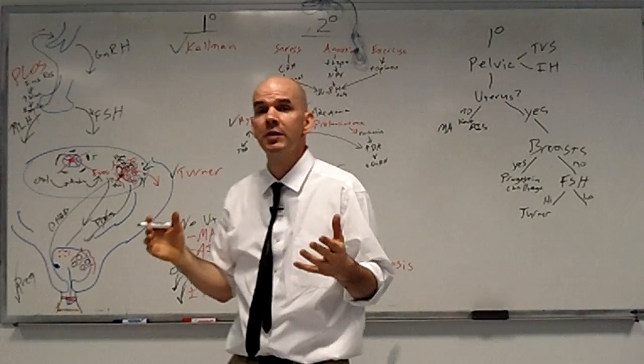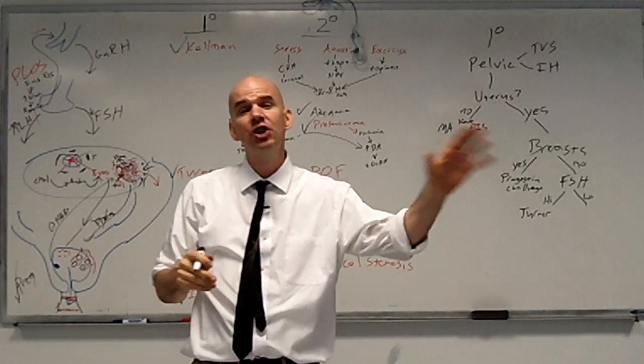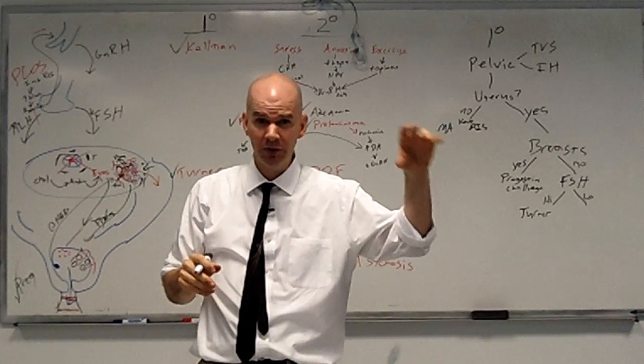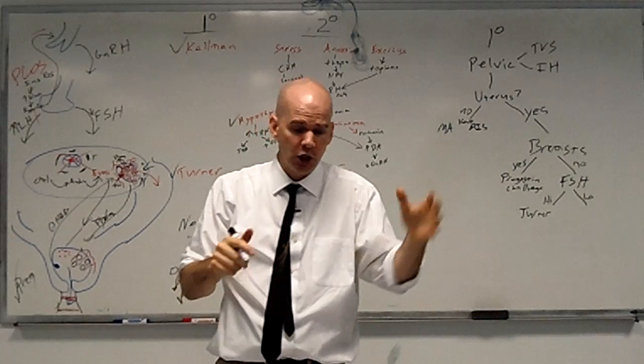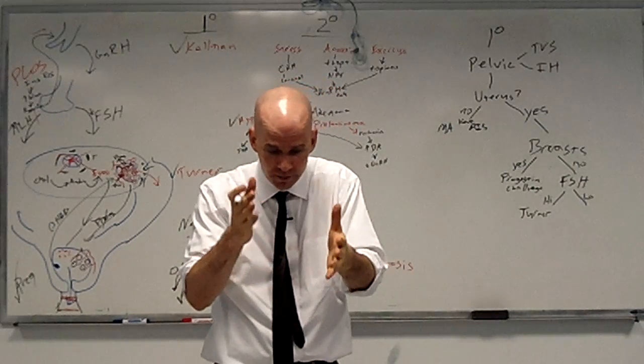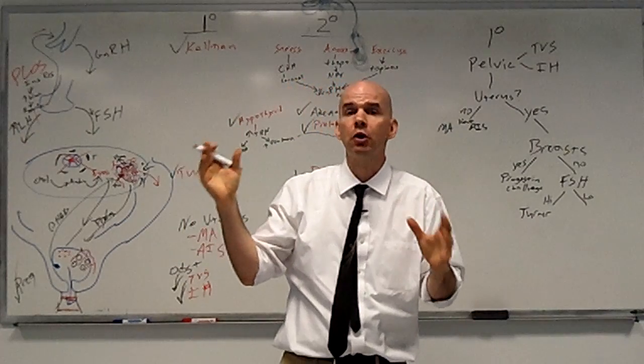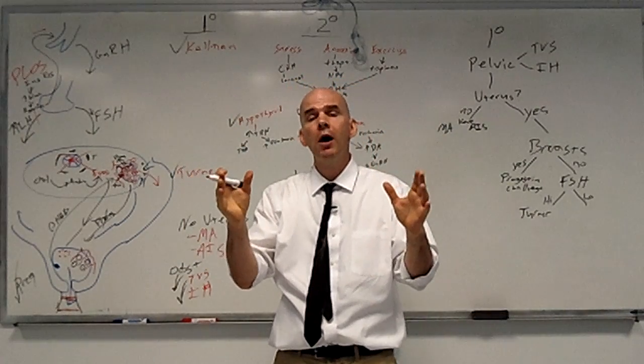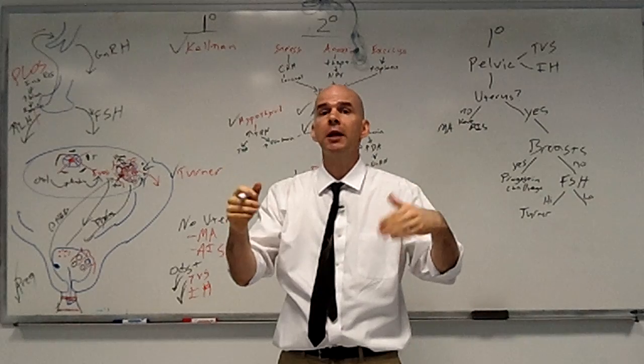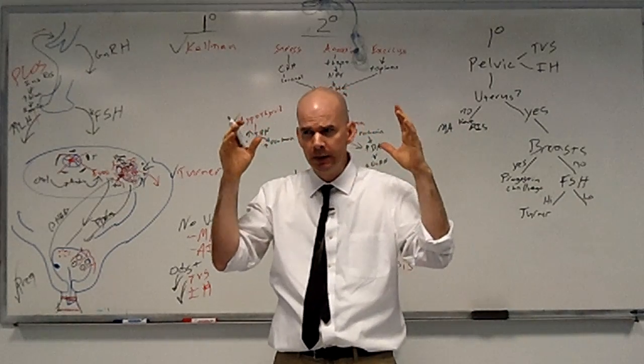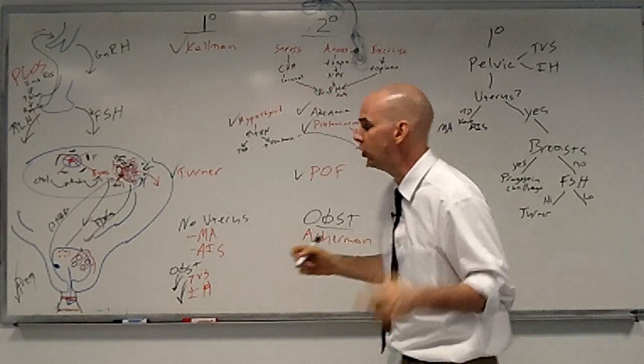Because remember, with Kallman syndrome, you not only have a lack of the GnRH cells in the hypothalamus, you also had a failure of the olfactory nerves to migrate to the olfactory cortex. And the MRI will, for sure, be able to pick up defects in the olfactory cortex if you've got Kallman.